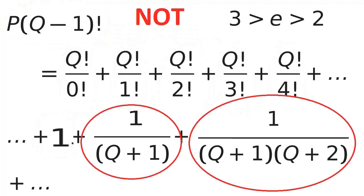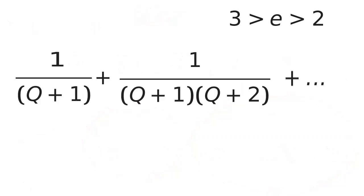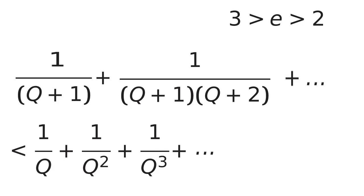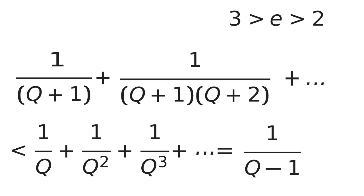Each of these remaining terms is not an integer — the denominators are all greater than 1. But is the sum of these non-integers an integer? Let's focus on this part of the sum. We know that it's less than the sum of the geometric series with a common ratio of 1 over q. We can work out the sum of that series, and we end up with 1 over q minus 1, which is less than 1.